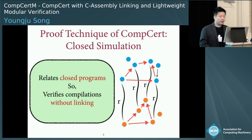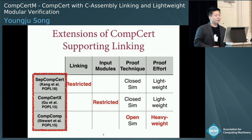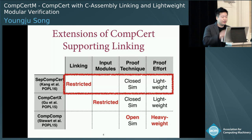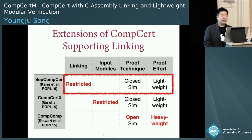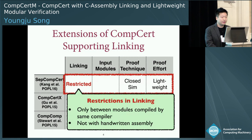To overcome this limitation, several approaches have been proposed. This table compares those approaches: SubcomCert, CompCertX, and Compositional CompCert, with their pros and cons. First, SubcomCert supports separate compilation while using closed simulations, which keeps the proofs lightweight. The reason it can use closed simulation even when compiling open programs is because it restricts linking in certain ways. Specifically, it only allows linking between modules compiled by the same compiler, and as a consequence does not allow linking with handwritten assembly.